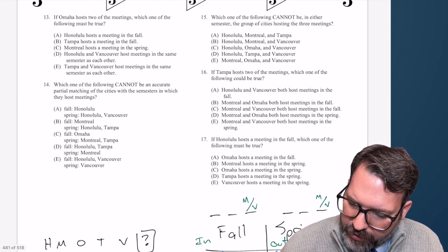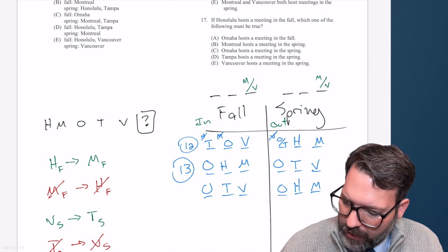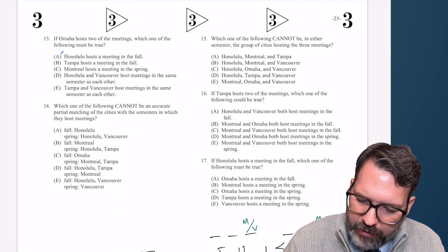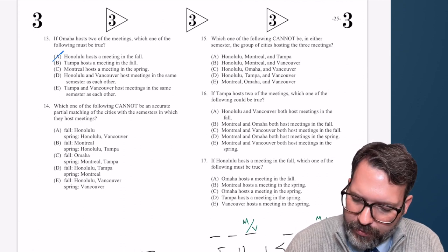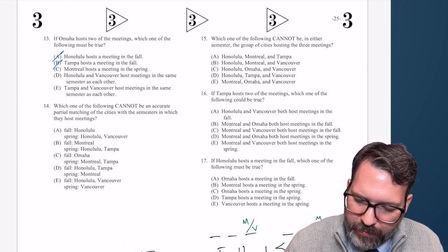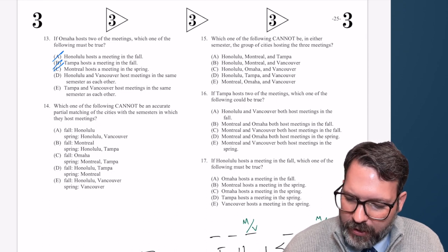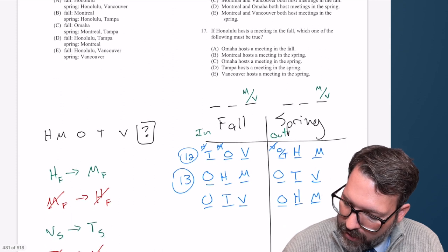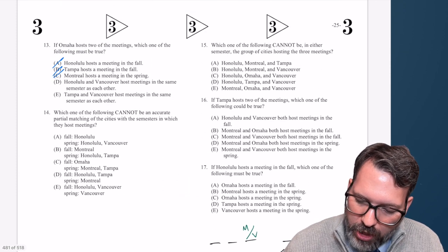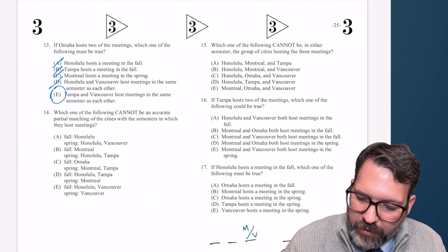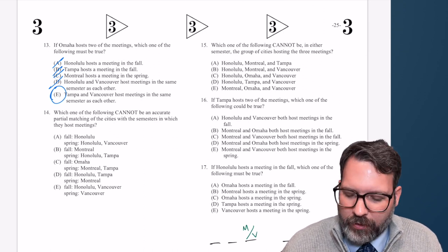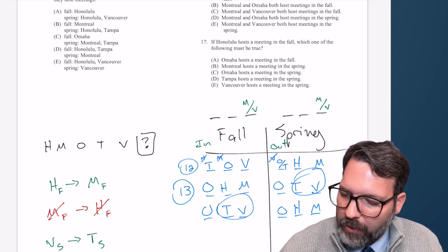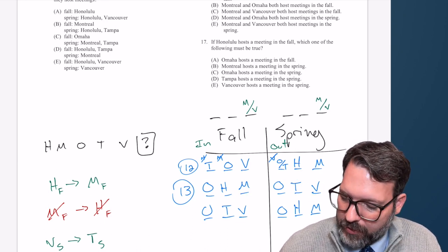This is a must-be-true. Looking at the answer choices: H hosts a meeting in the fall — not a must-be-true, we could switch them around. T hosts a meeting in the fall — same thing. M hosts a meeting in the spring — not necessarily. H and V host meetings in the same semester — no. T and V host meetings in the same semester — yes, no matter what T and V are going to have to be together. So the answer is E.